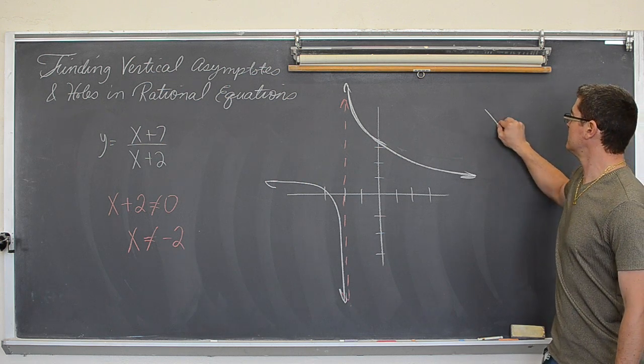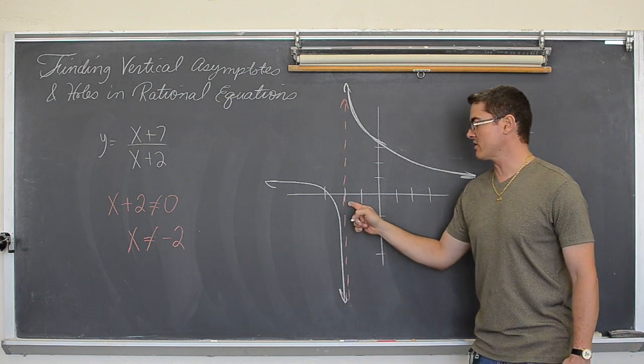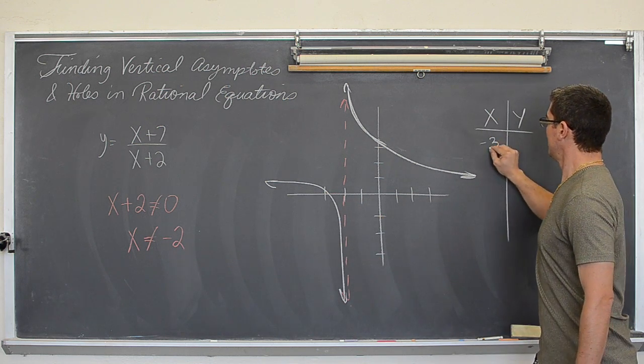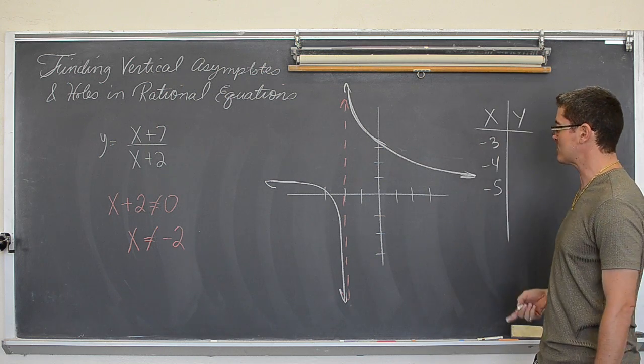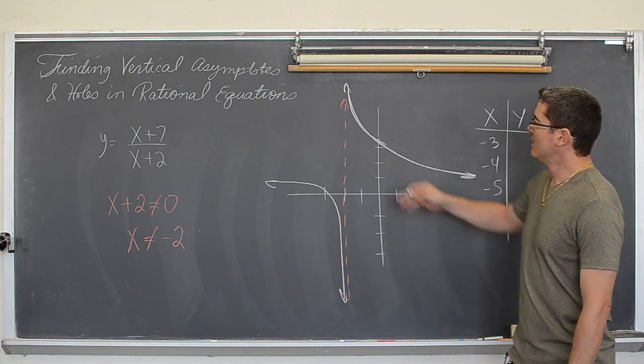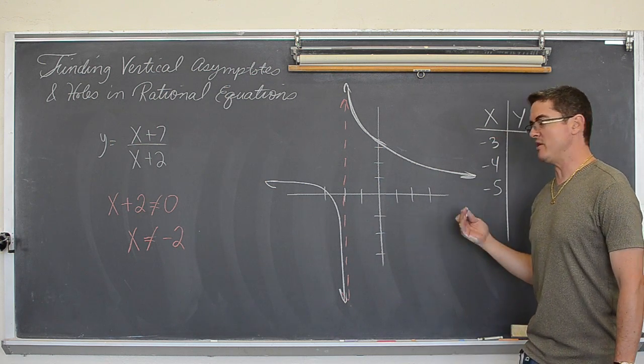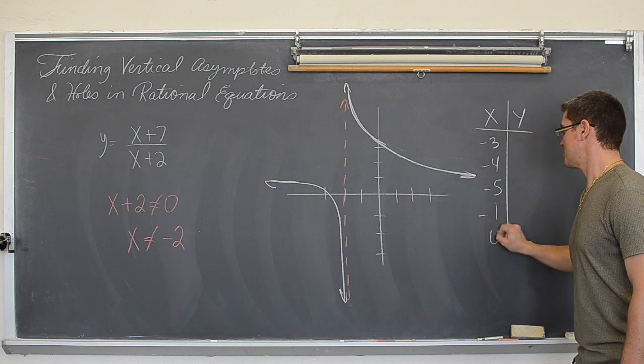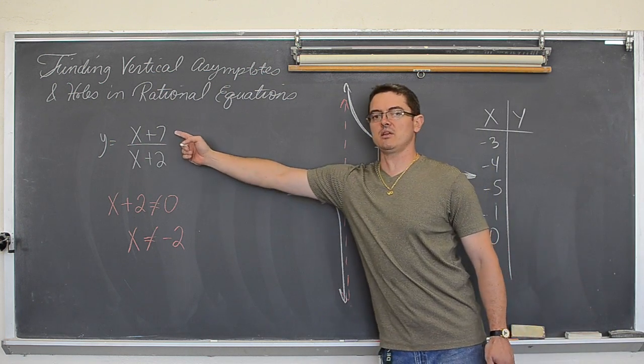So for a sketch of the graph, you can make up some x values such as, the vertical asymptote is at negative two. So try negative three, negative four, negative five. On the right hand side of the asymptote, to the right of negative two, maybe you can try some values of negative one, zero, and one. And then plug each of those in one at a time into the equation.